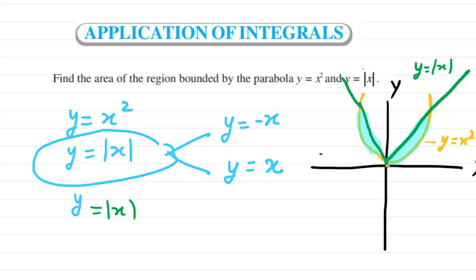If we find out the area in the first quadrant, we can double it because both shaded parts are similar. Once we find out the area of this part, we will double it. Now let me write down the coordinates.